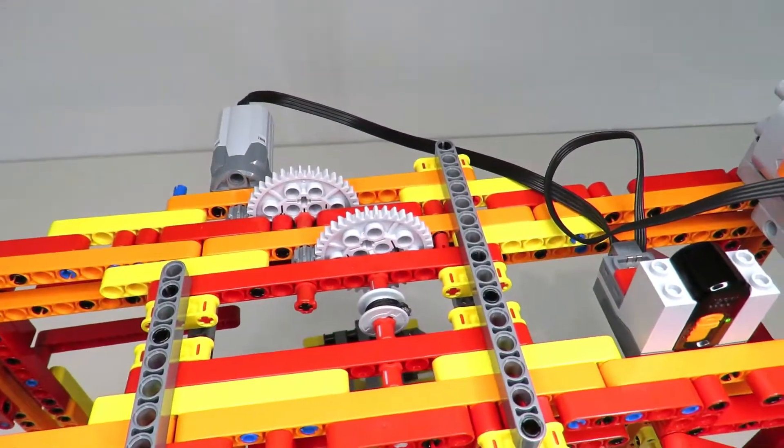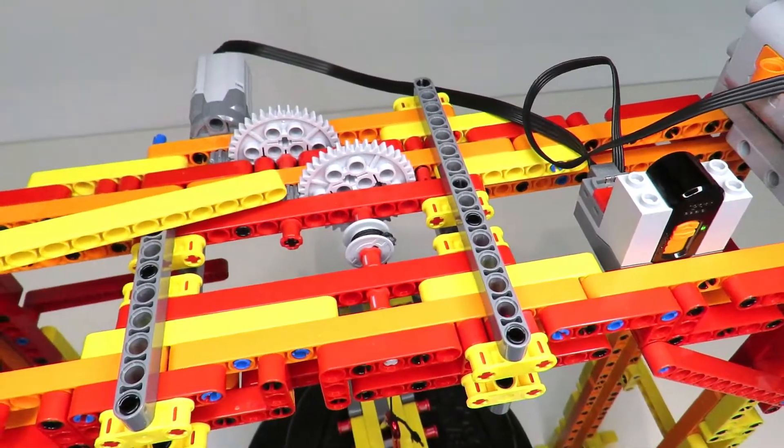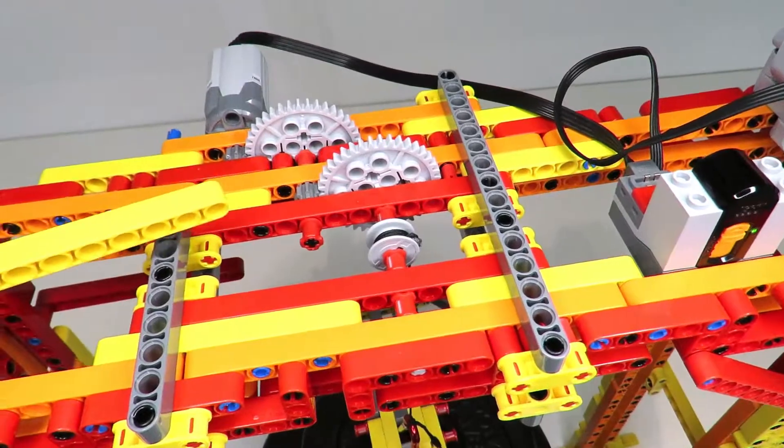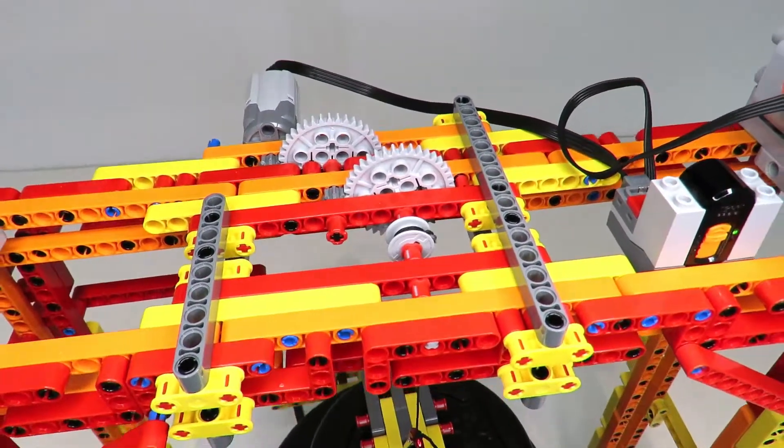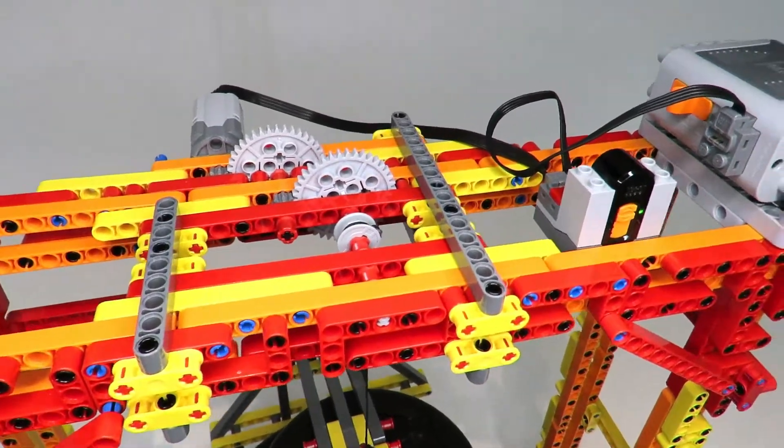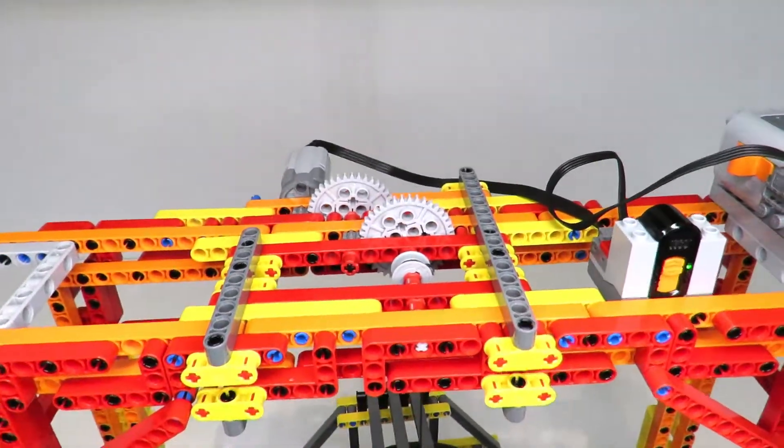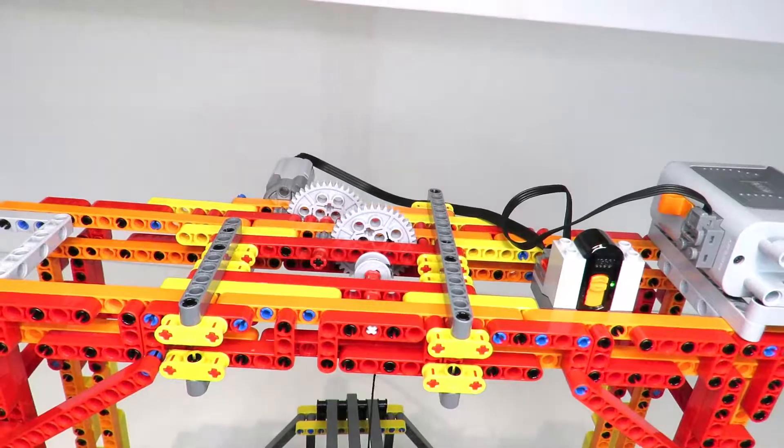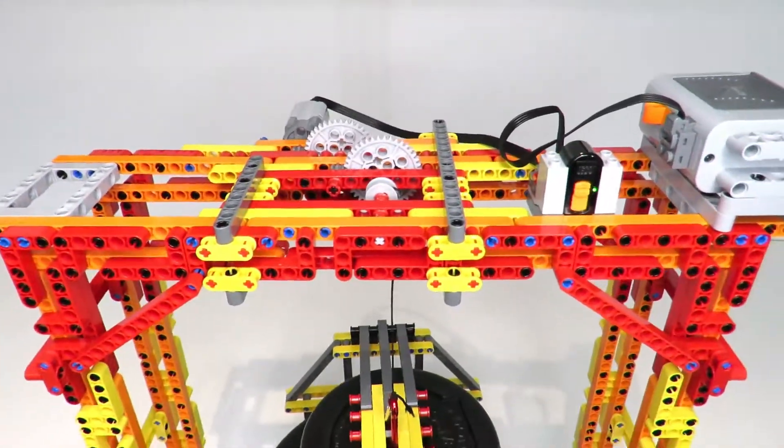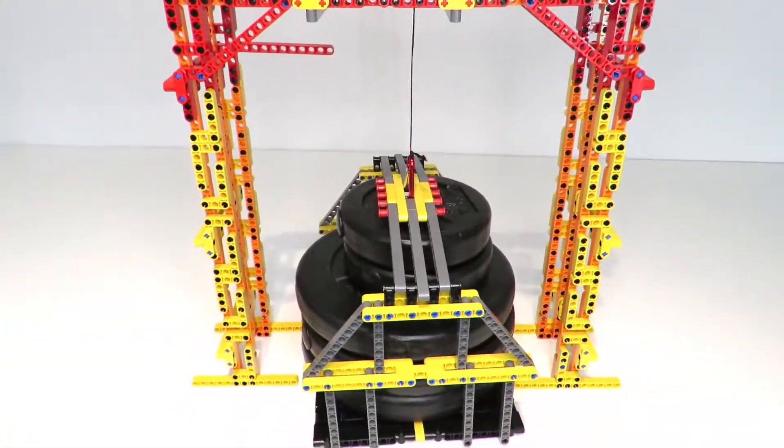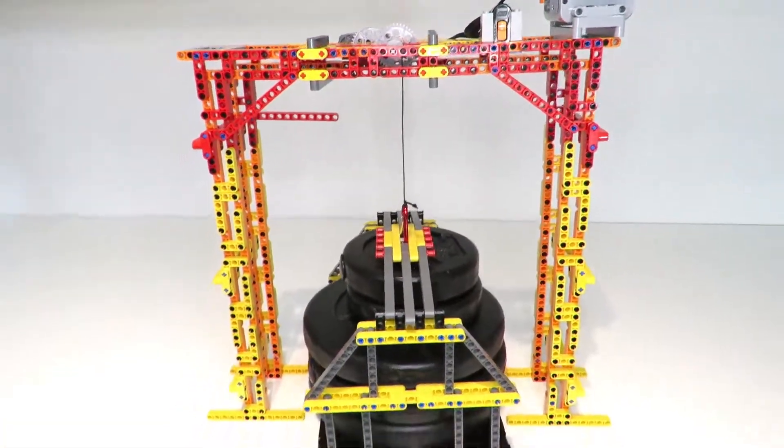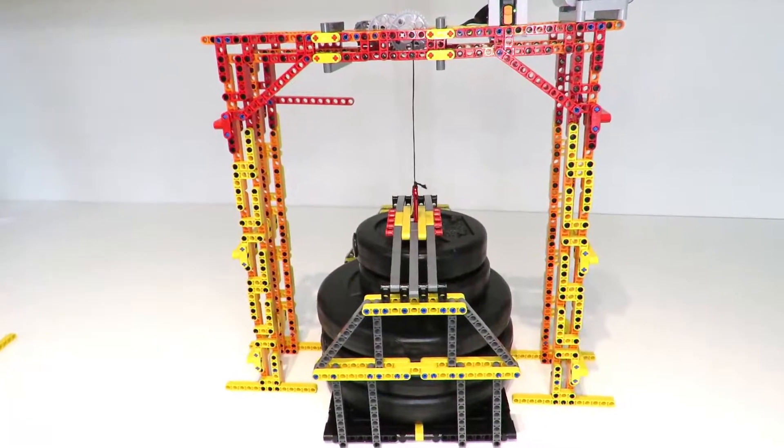I've updated the gearbox. I replaced that three to one with a five to one gear ratio, giving an overall 25 to one instead of 15 to one. That will transfer more torque to the lifting axle. The overall lifting speed is slower but the power should be better. Let's try nine and a half kilograms.